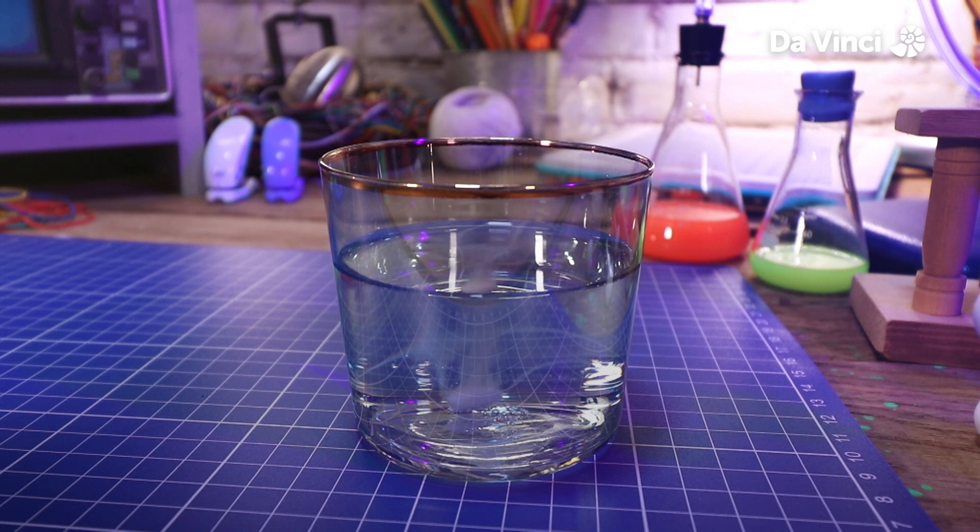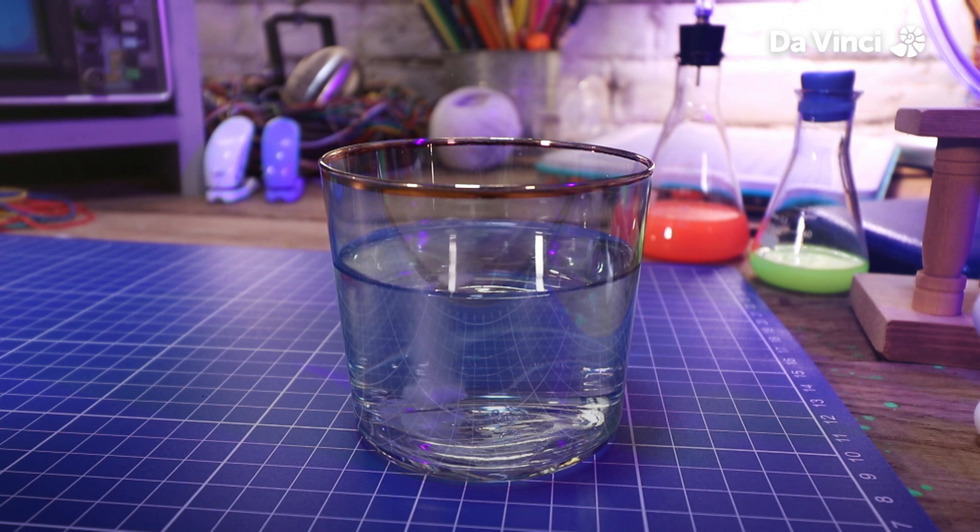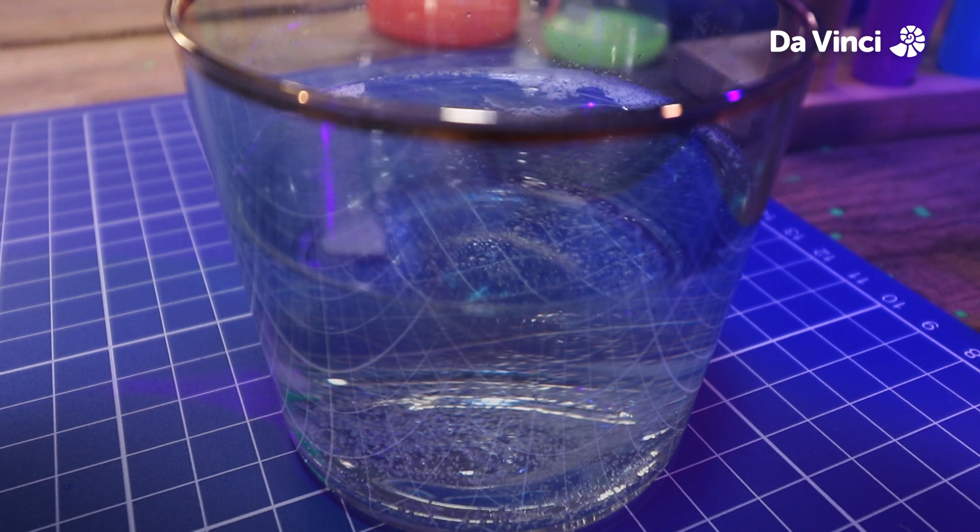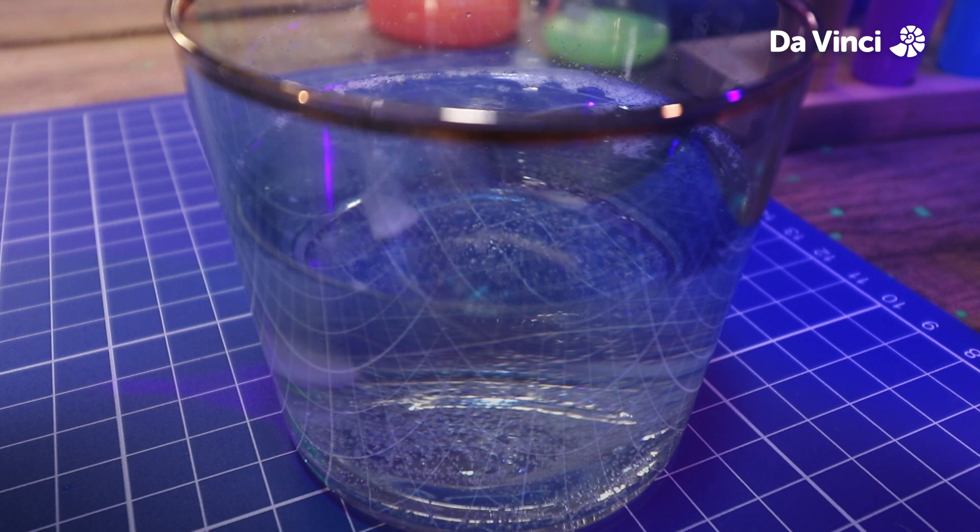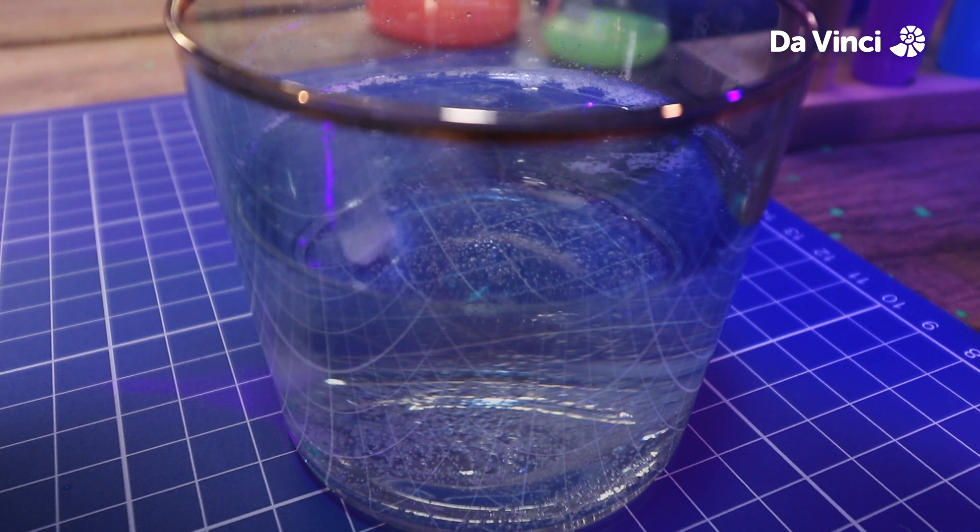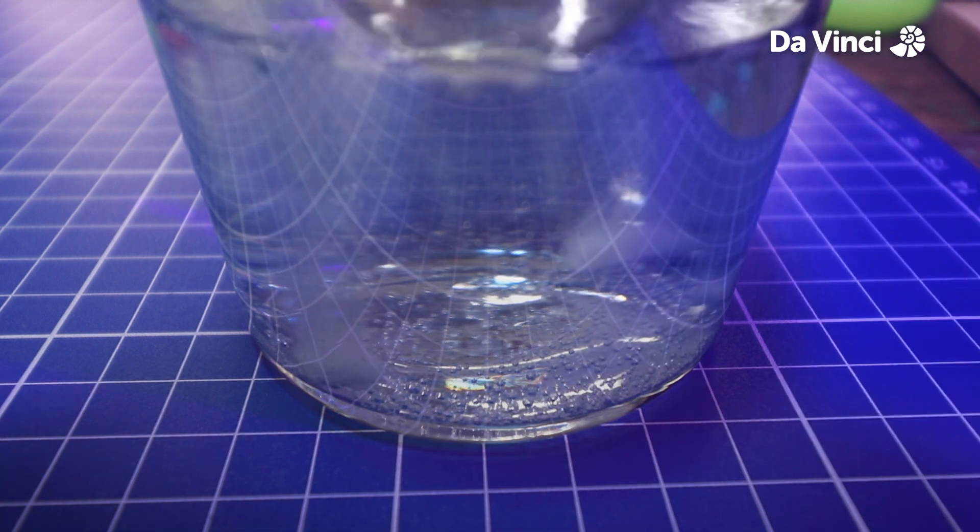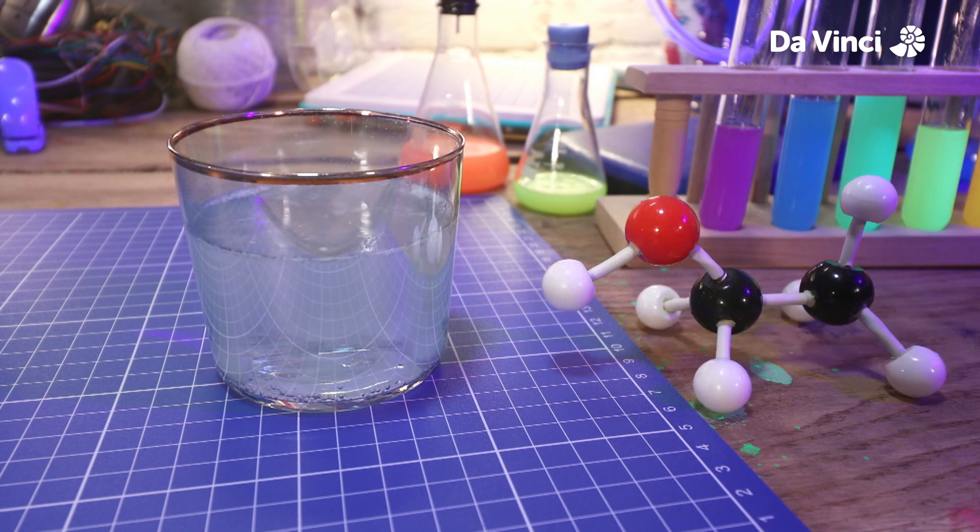You can see it starting to fizz up. An effervescent or carbon tablet is designed to dissolve in water. This act of dissolving releases carbon dioxide gas, which makes bubbles in the liquid water. The bubbles then quickly rise to the top. These bubbles will be a key component of our lava lamp. I'll chuck a couple more in so you can really see it fizzing. Pretty cool, hey Pooch?